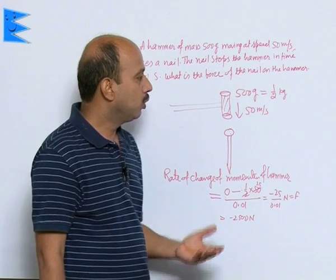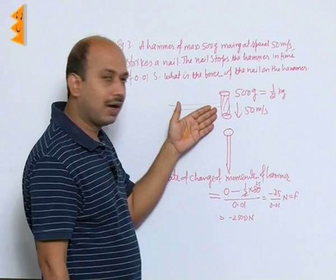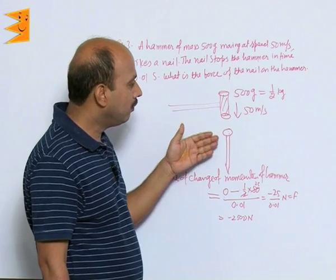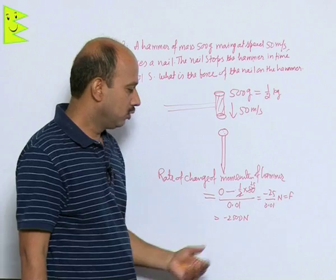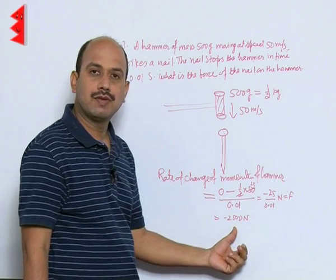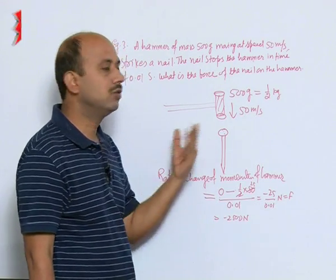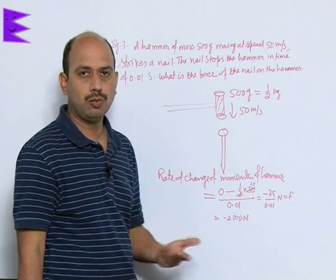Because in this process whatever the force is applied by hammer on the nail, nail will apply equal and opposite force on the hammer. So we can calculate this force is 2500 Newton, it is very simple to calculate by using conservation of linear momentum.